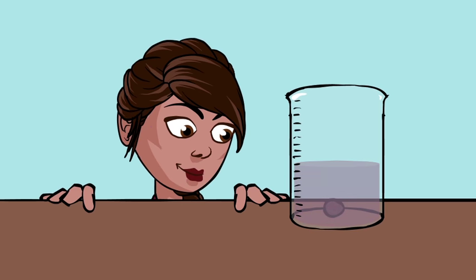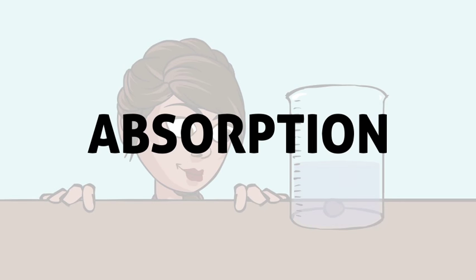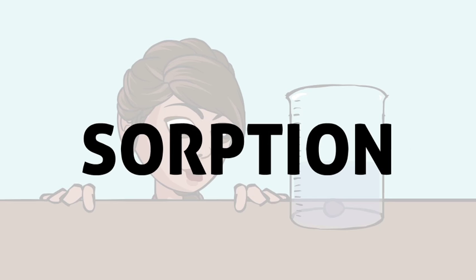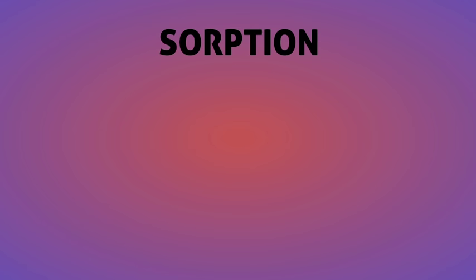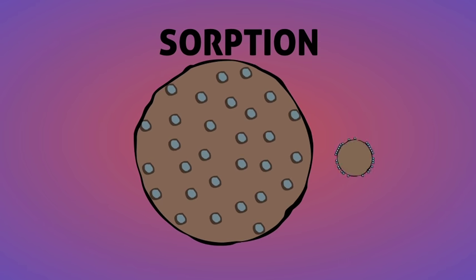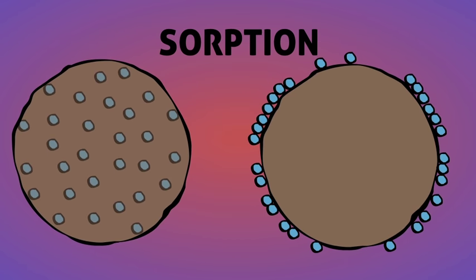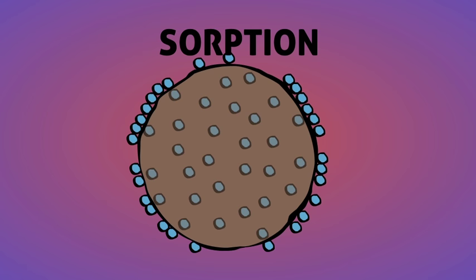Sometimes we can't tell whether observed changes are happening due to absorption and or adsorption, and we use sorption to cover all bases. Sorption is absorption and or adsorption considered as a single process, but often we can tell which process is responsible.